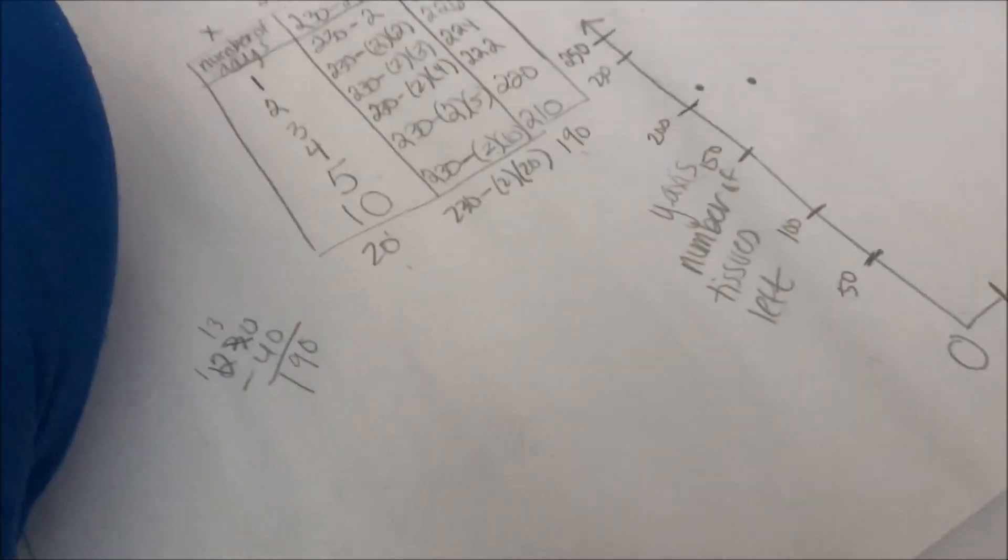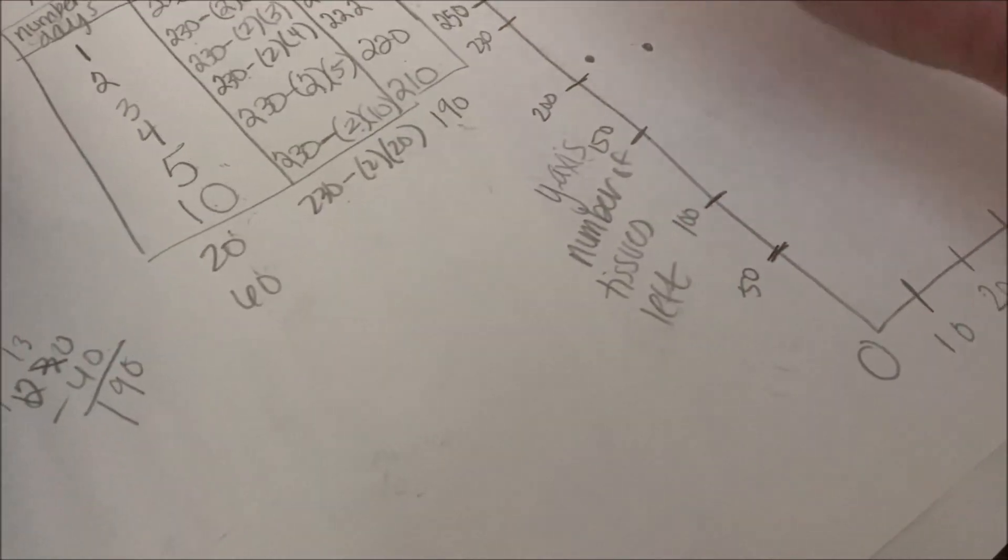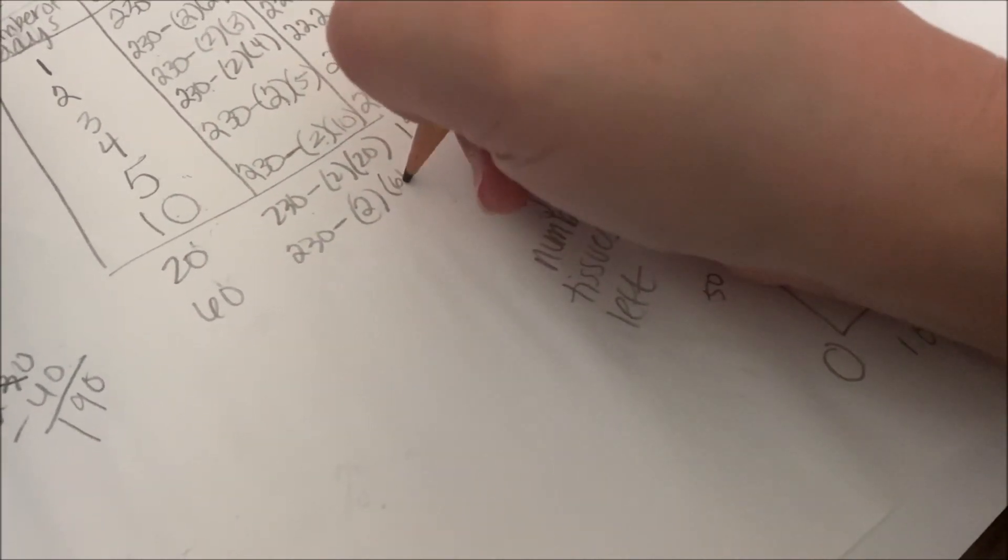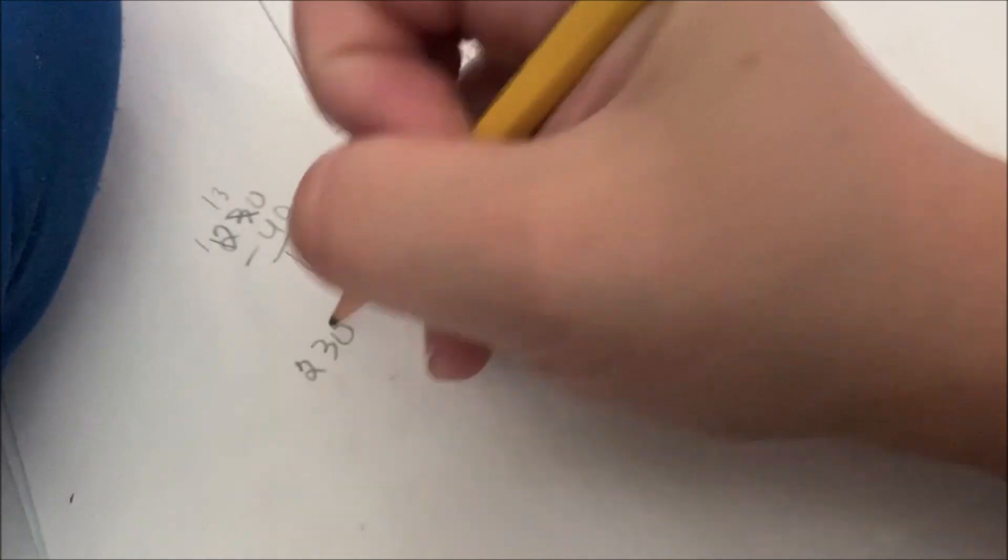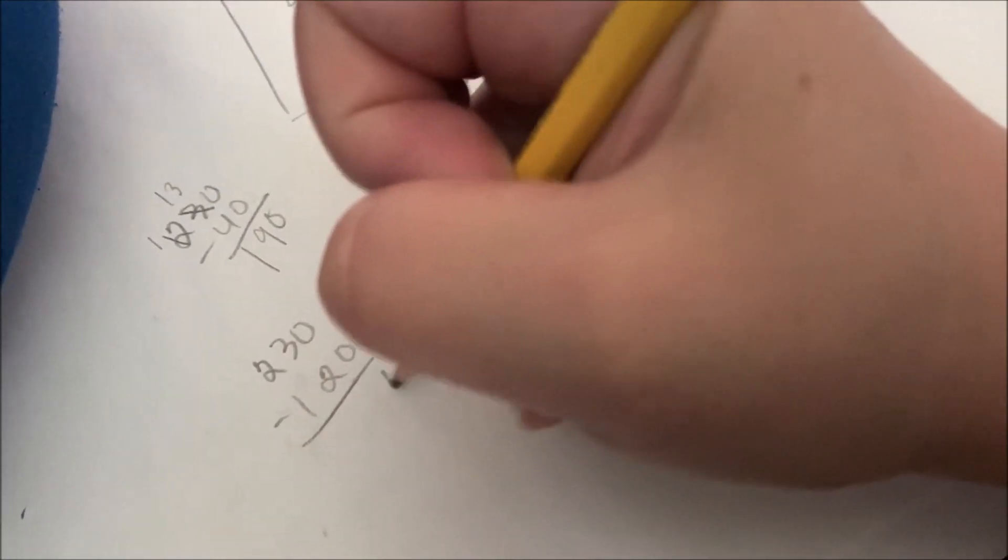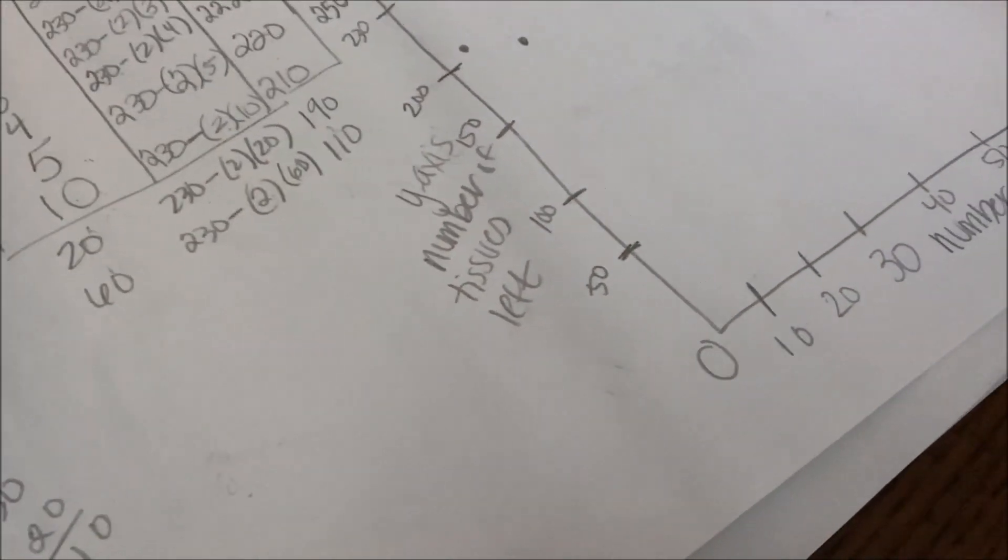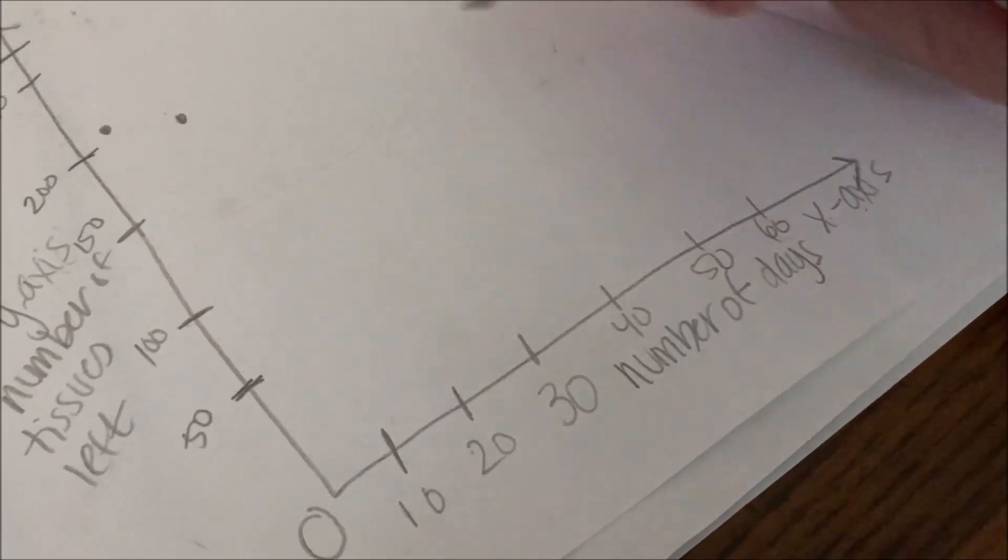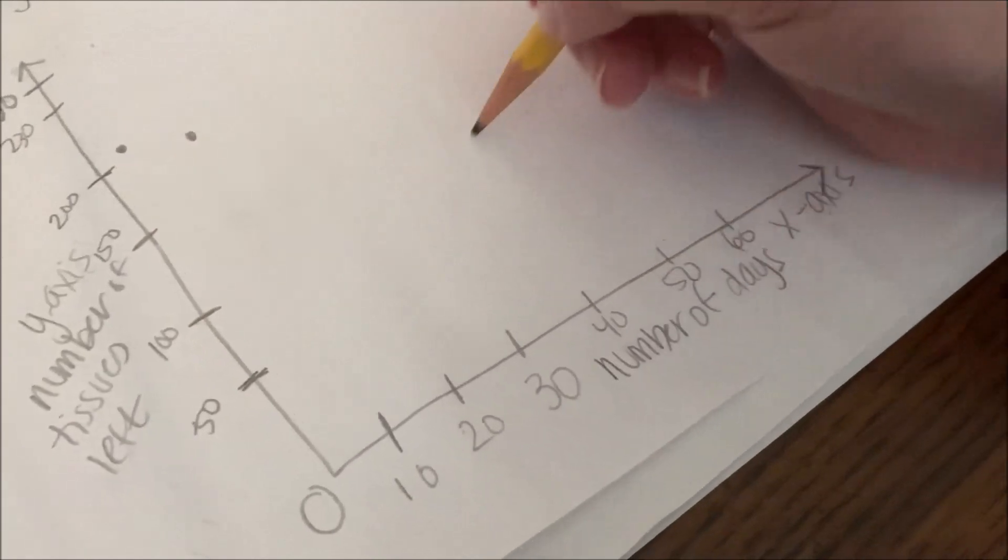What happens after 60 days? That would be two months. 230 minus 2 tissues per day times 60 days. 60 times 2 is 120. So now I have 230 minus 120. 110 tissues left after 60 days. So 60 here is about 110.